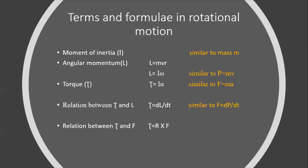Similar to momentum in linear motion, where momentum is mass times velocity (Mv), in angular momentum the mass is replaced and velocity is replaced too. In linear motion, momentum is Mv. In rotational motion, angular momentum is I·ω, where I is moment of inertia. Another expression for angular momentum is Mvr.